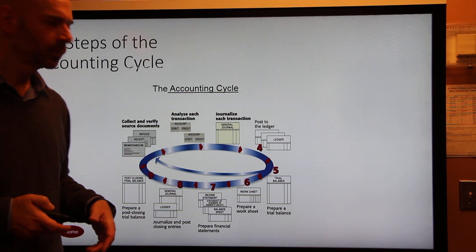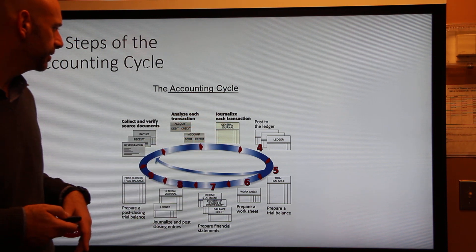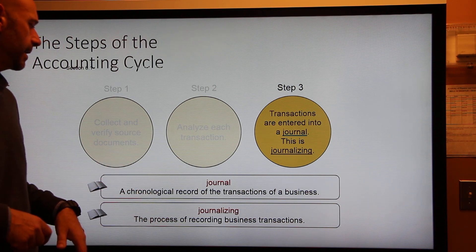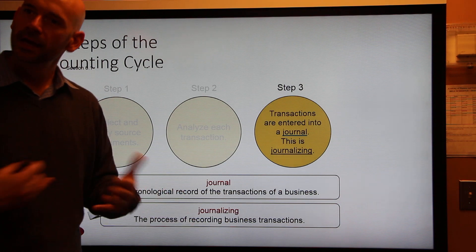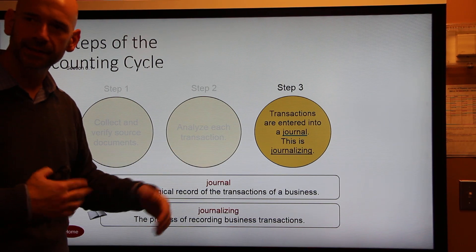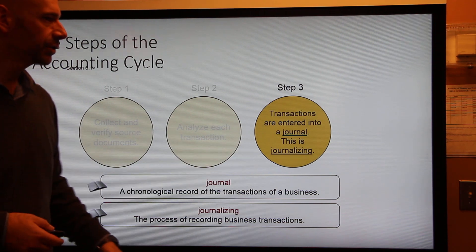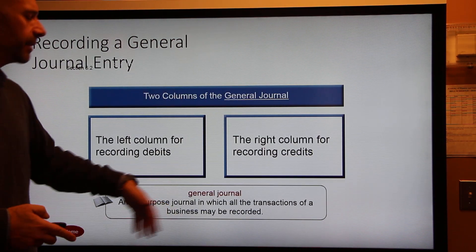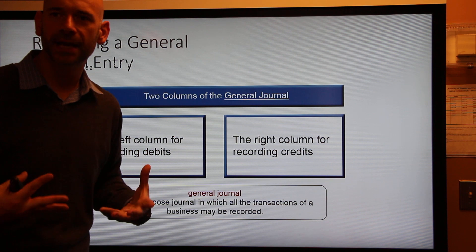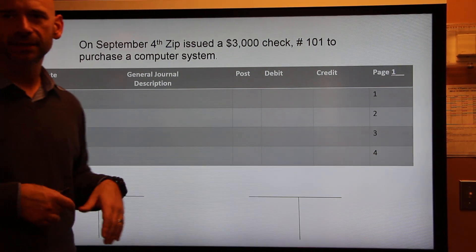Now that we've covered analyzing and source documents, we have to take our transactions and put them into the general journal. A journal is a chronological record of a business's transactions. Journalizing is the process of recording those transactions so you have a place to go back and see what date it took place, which accounts were affected, for how much, and which accounts were debited and credited. The general journal is the book of original entry — the first stop after your source document, where you bring it to record the transaction.